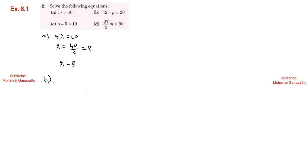Part b: 42 minus b equals 20. Moving the constant to the other side: minus b equals 20 minus 42, so minus b equals minus 22. Minus and minus cancel, therefore b equals 22.